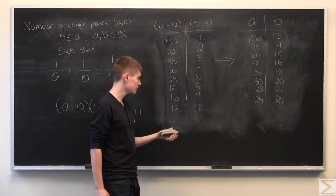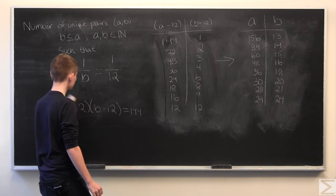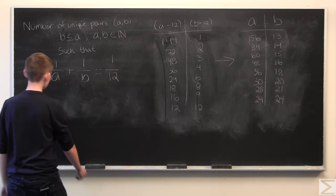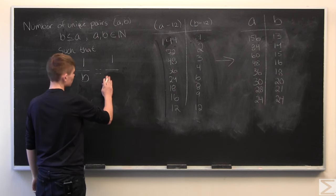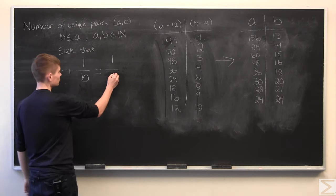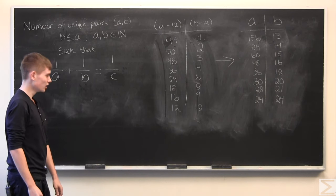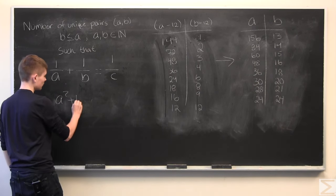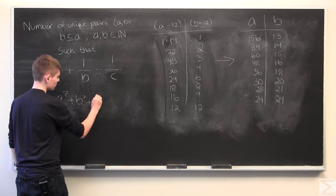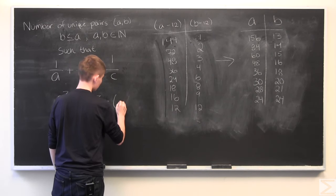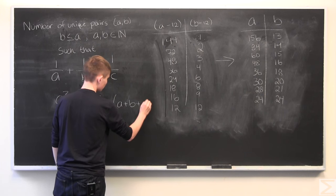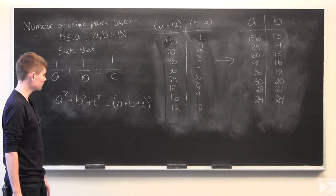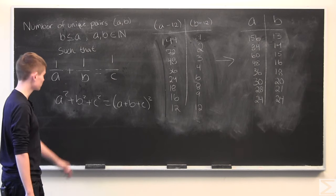And a couple things to add to this, which if this was too quick of a problem for you, you can try to prove these on your own. If you have 1 over a plus 1 over b equals 1 over c, a couple of things are true. A squared plus b squared plus c squared is equal to (a plus b plus c) squared. You should try to figure out why that's true.